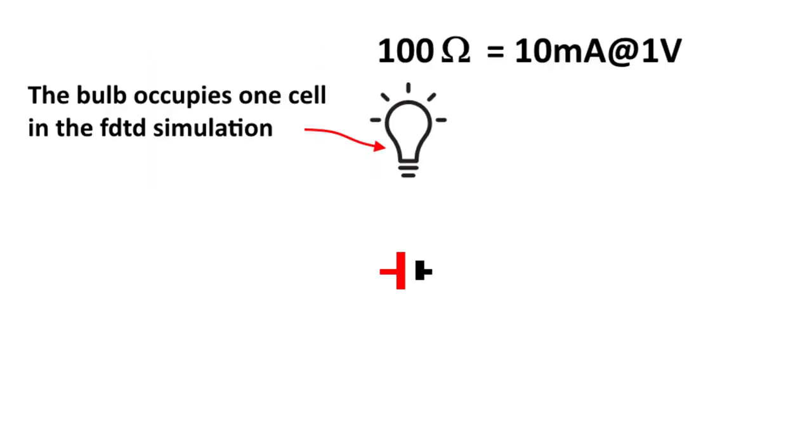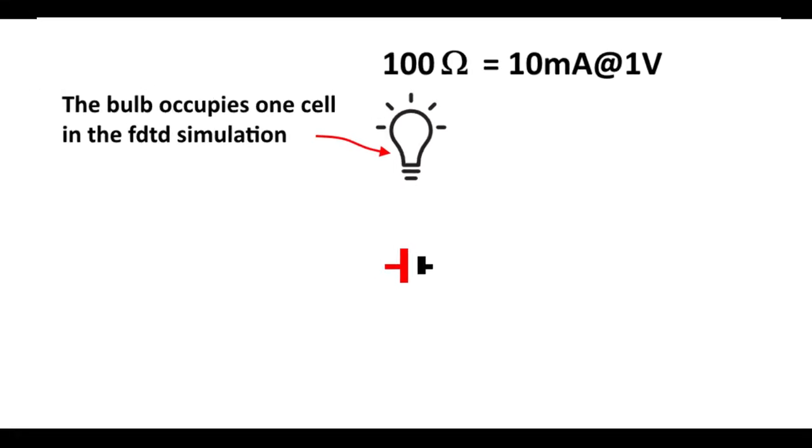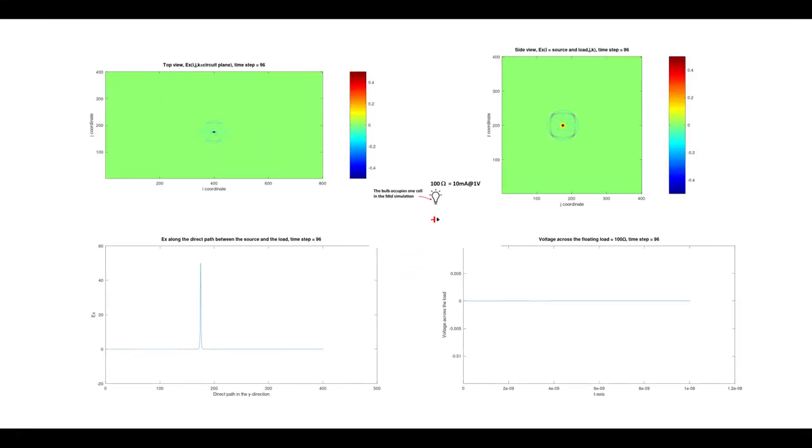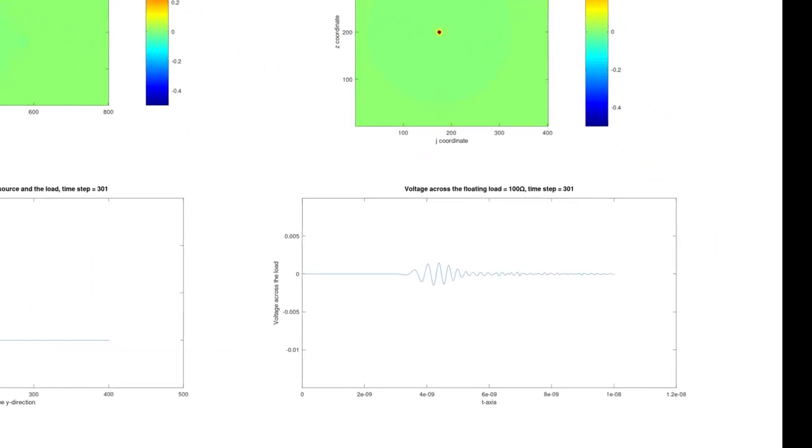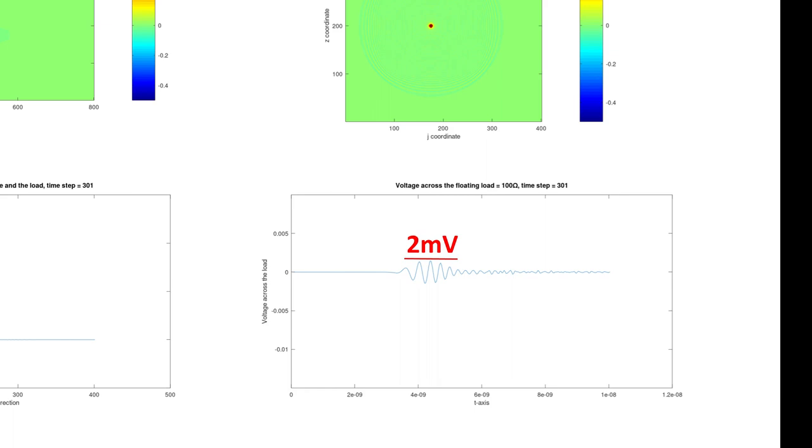A natural question to ask is that if the light bulb can be turned on by the EM wave, why do we need the wire in the first place? Can we turn on the light bulb without any wire? So in the next simulation, the light bulb is floating without any wire attached to it. From the simulation, we see that the EM wave does induce a tiny oscillating voltage and current, but eventually subsided to zero. The bottom left plot shows EX along the direct path from the source to the light bulb, and it decays rapidly, and the bottom right waveform shows that the light bulb picking up a voltage of 2mV at most.